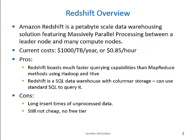Amazon Redshift is a petabyte-scale data warehousing solution featuring massively parallel processing, or MPP, between a leader node and many compute nodes. It sounded a lot like Amazon's Elastic MapReduce to me at first, so I did a little research to understand how it was different. Redshift boasts much faster querying times for big data than MapReduce methods.